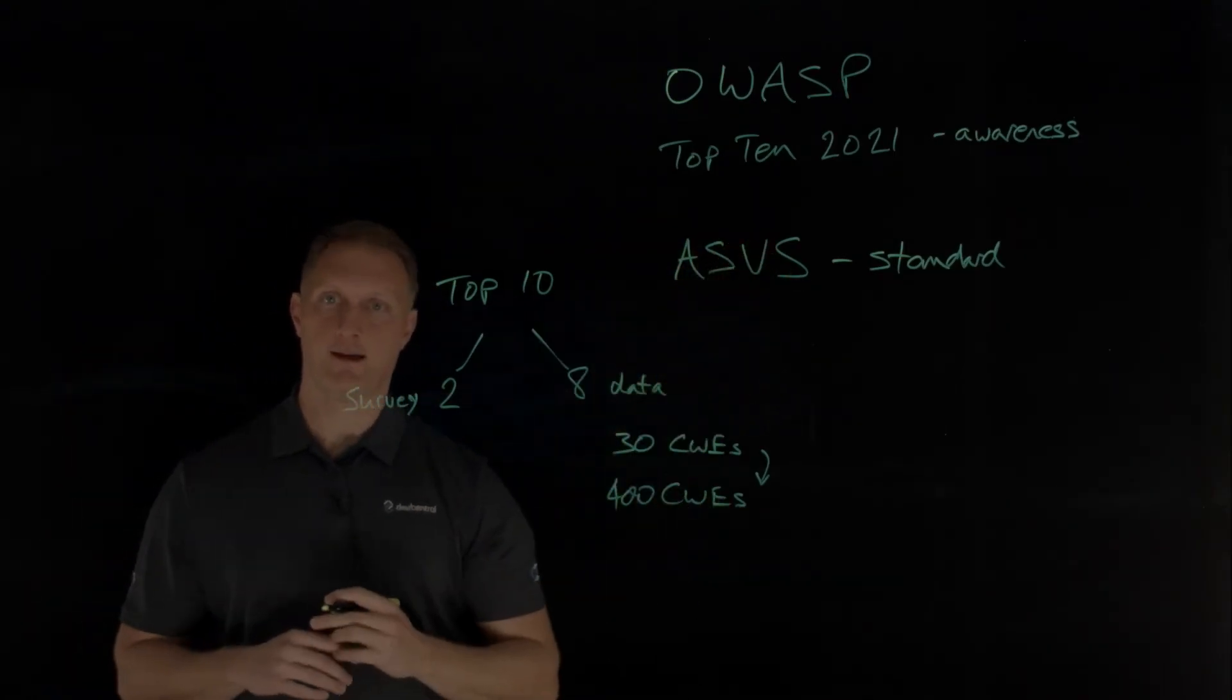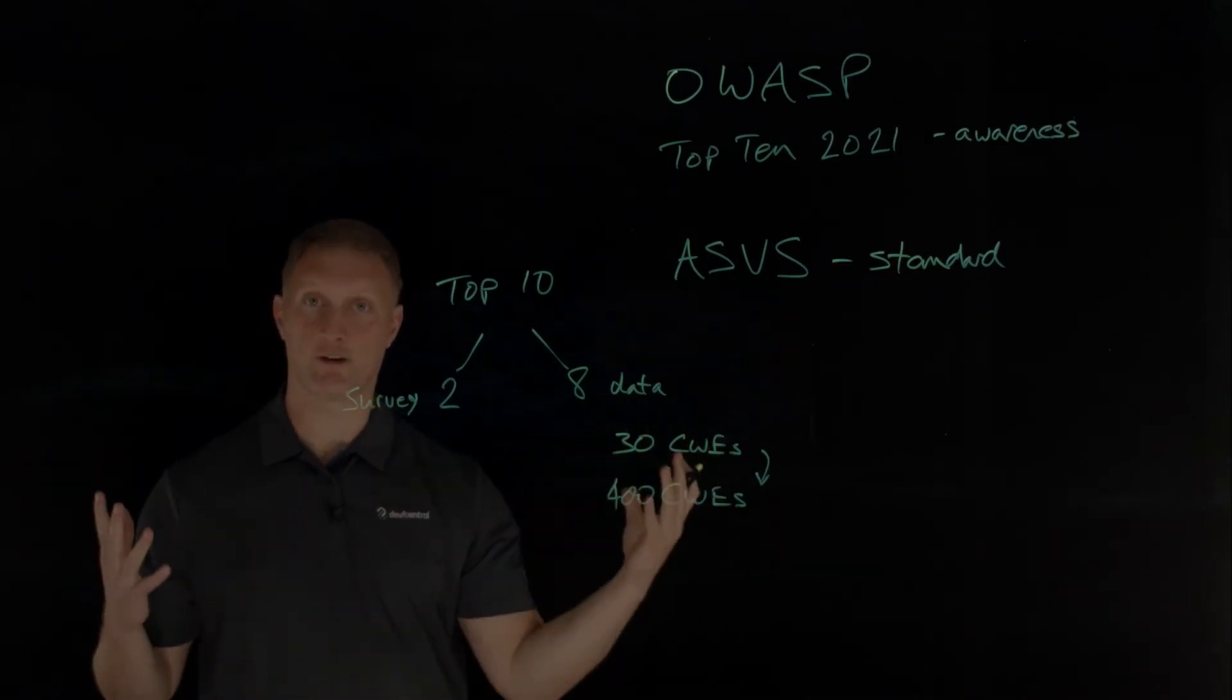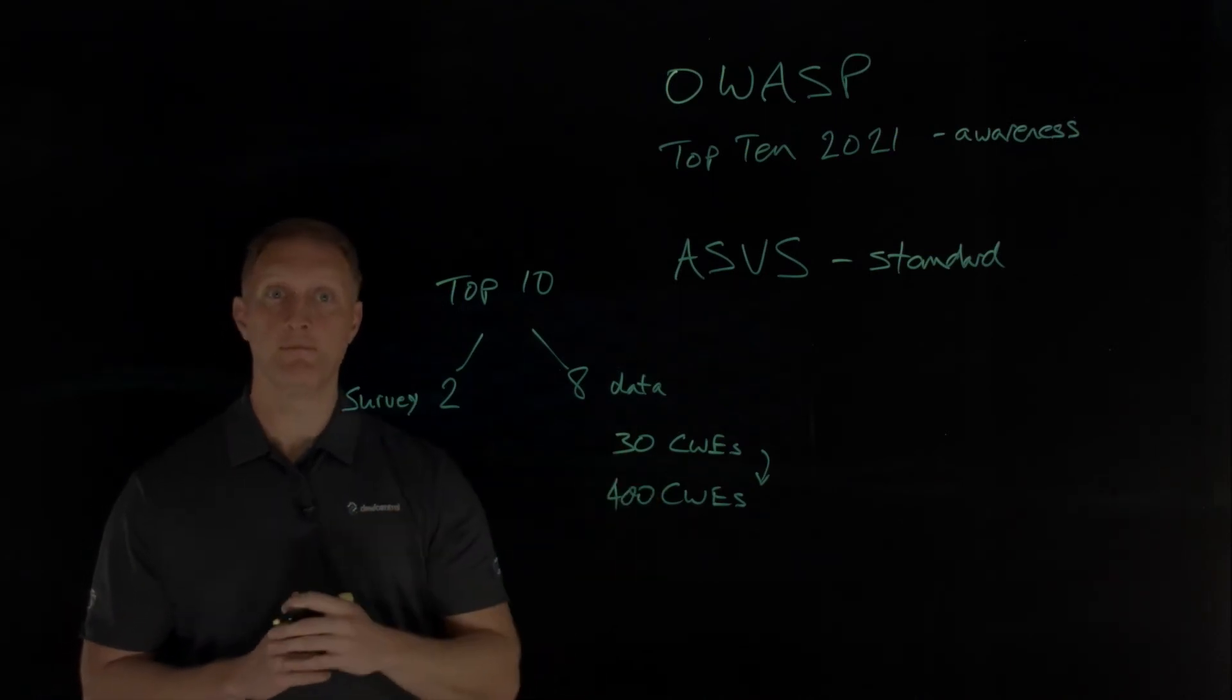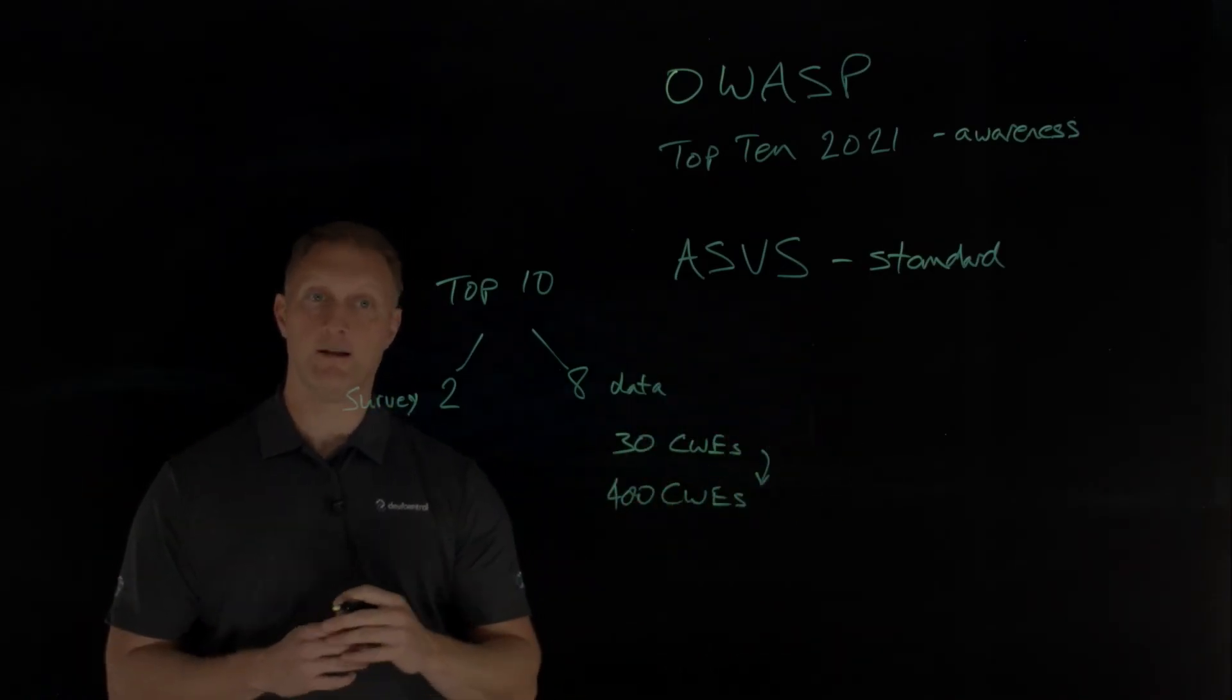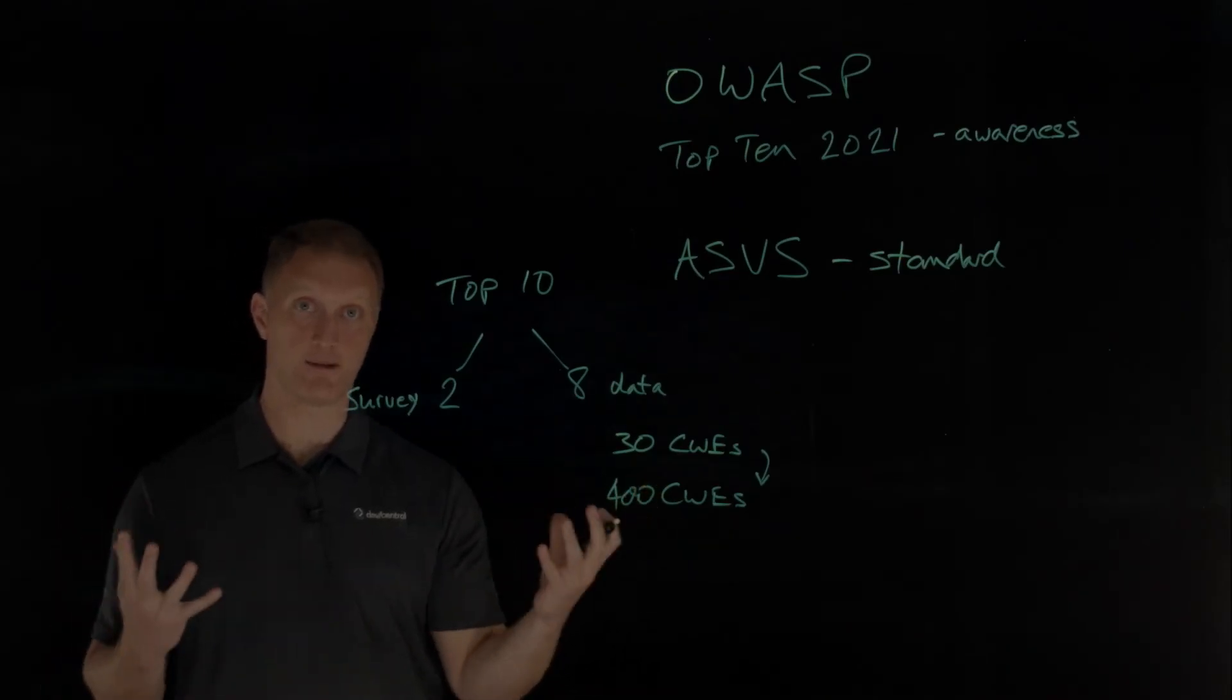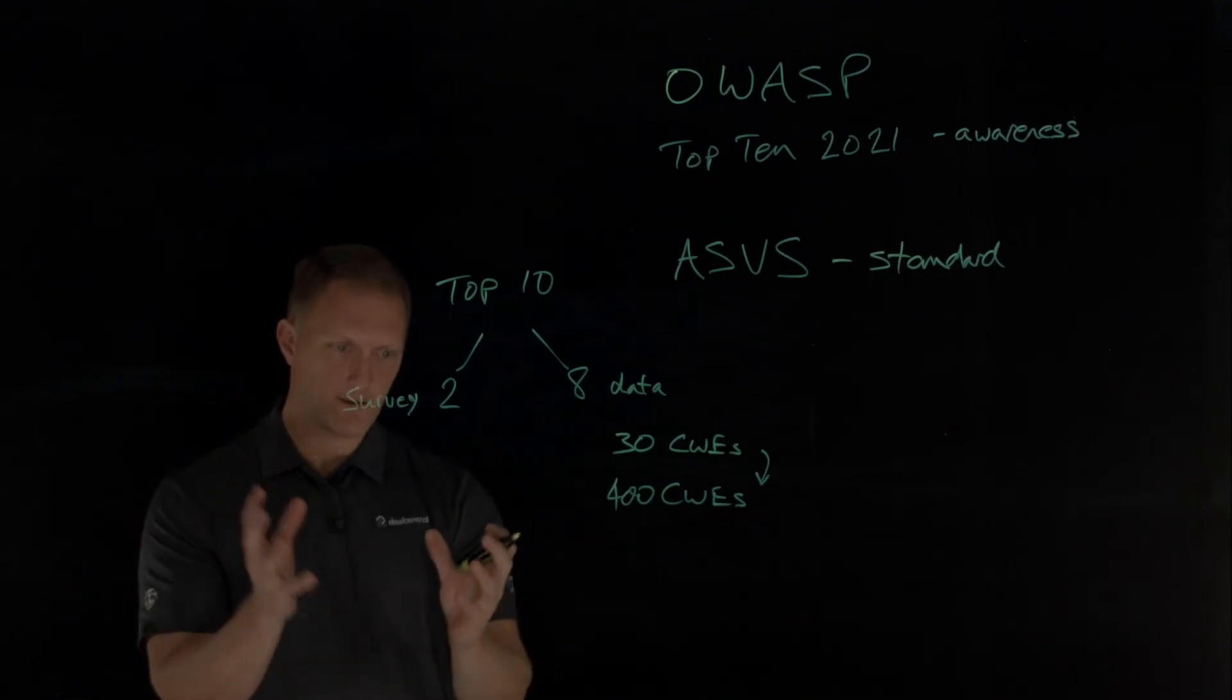They published this call for data and got data from organizations that are testing vendors, security testing vendors, bug bounty vendors. Several organizations came back with data to the OWASP organization. Some of these were anonymous, but the data donated from all of these organizations around the world accounted for over 500,000 applications. This is the largest and most comprehensive application security data set that OWASP has ever been able to deal with.